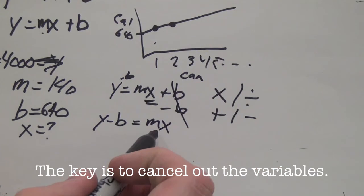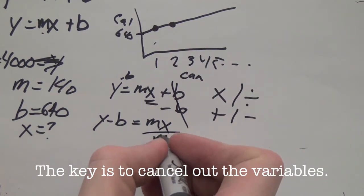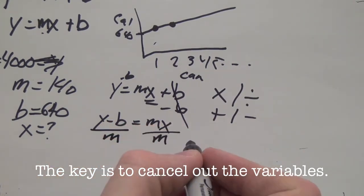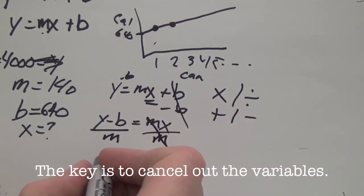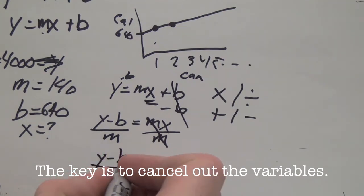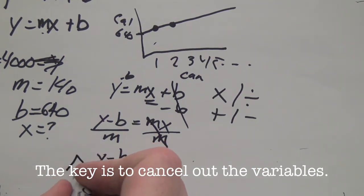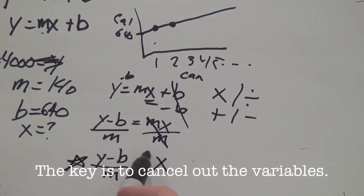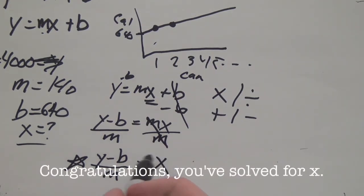So let's rewrite the formula: Y minus B equals MX. We've canceled out B. M is being multiplied by X, so if we want to divide both sides by M, this cancels each other out — the opposites cancel out. And, lo and behold, Y minus B divided by M equals X. This is the goal — for manipulating formulas, you have to isolate the variable in question. The variable in question is X, meaning it is the only thing on one side of the equal sign. X now equals Y minus B divided by M.